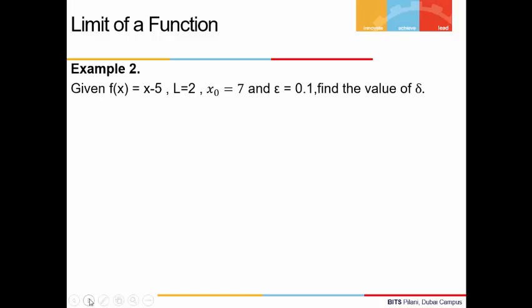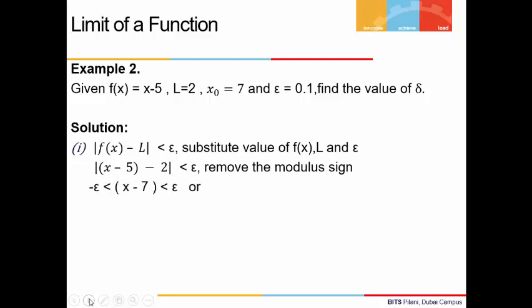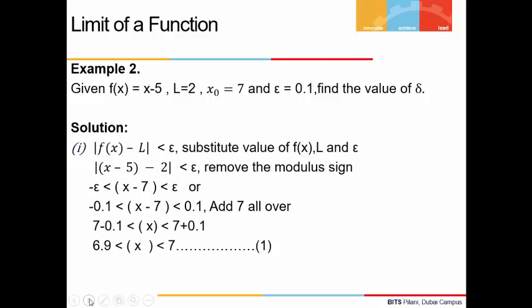Example: f(x) = x - 5, L = 2, x₀ = 7, epsilon = 0.1. Find delta. We start with |f(x) - L| < epsilon, substitute the values, remove the modulus, and get -0.1 < x - 7 < 0.1. Adding 7 throughout gives 6.9 < x < 7.1. We call this inequality (1).